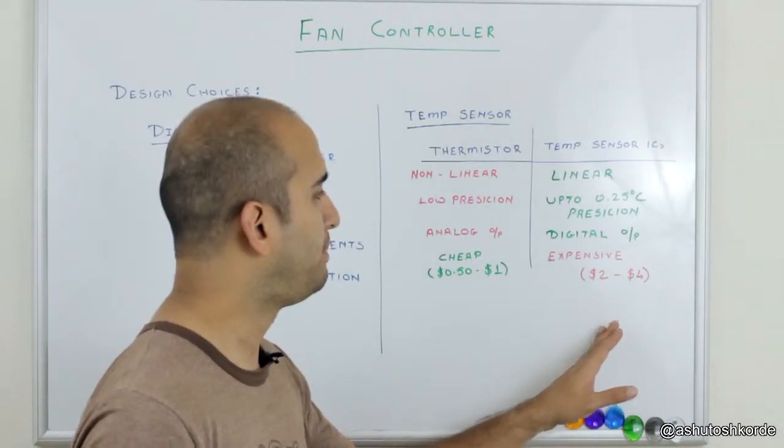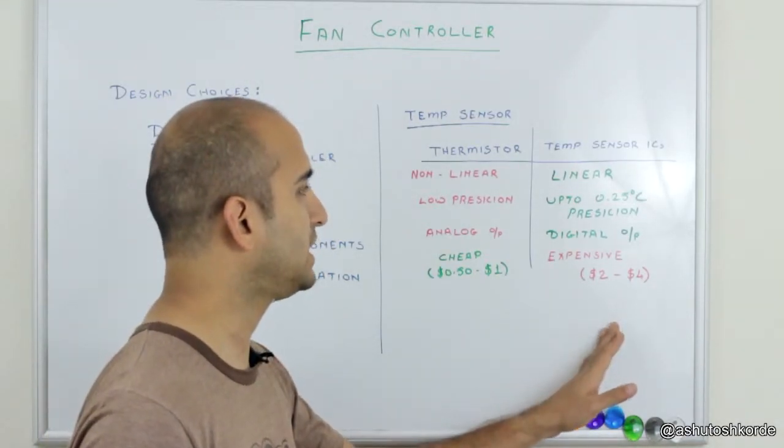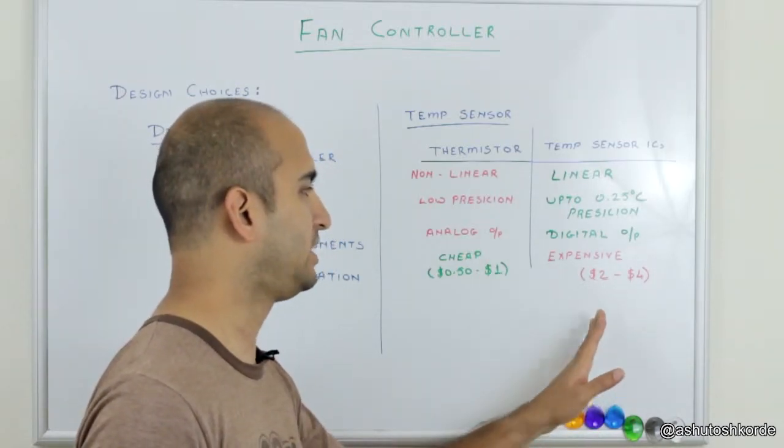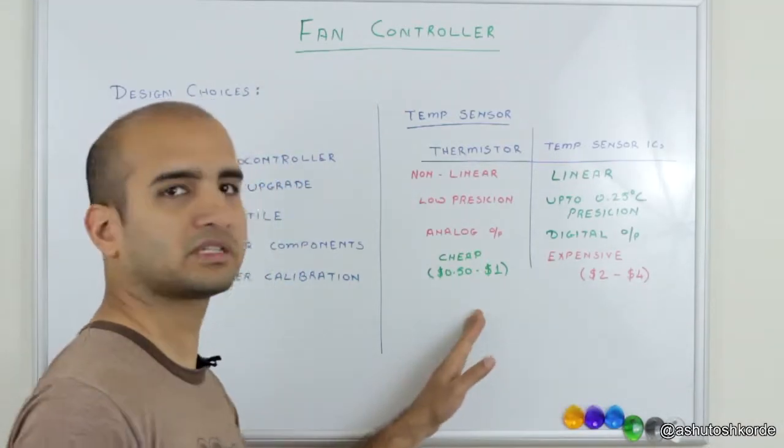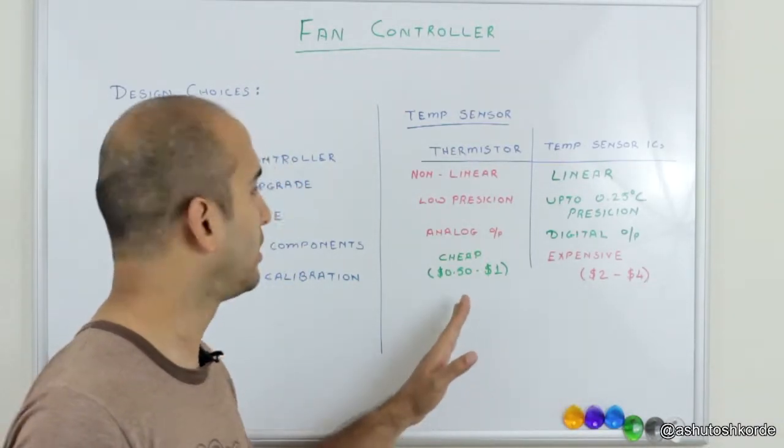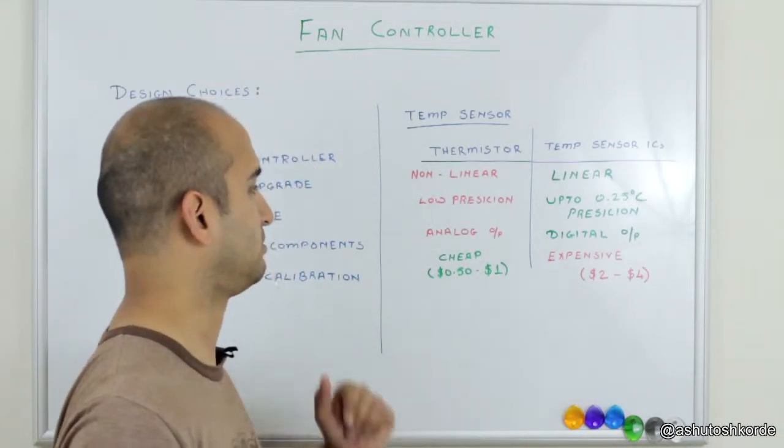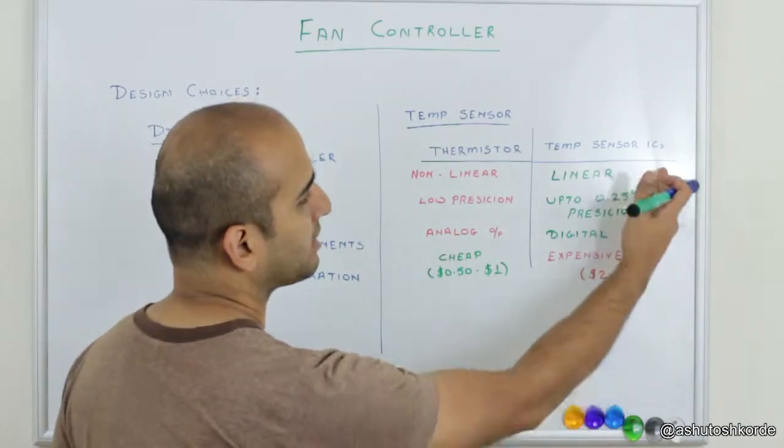is usually a bit harder than a thermistor. Because now in this case you now have to use some sort of a serial bus to communicate with the temperature sensor ICs, whereas thermistor is just a single wire ADC that can connect to your ADC and we are done there. So do we really need a sensor IC?